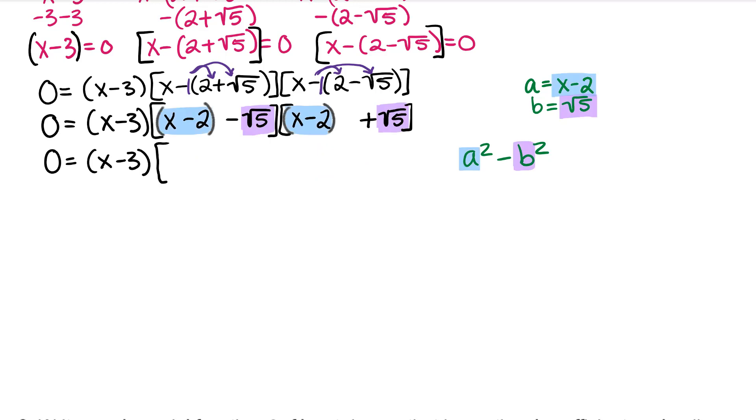Multiplying the difference of perfect squares results in a squared minus b squared. If a is x minus 2, then we have a squared, and b is root 5, but that should also be squared, and the sign in between is minus.